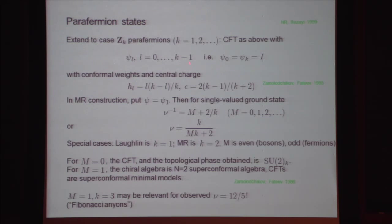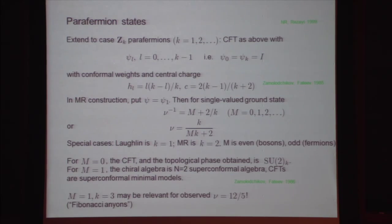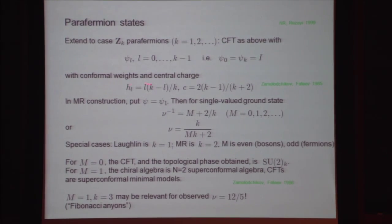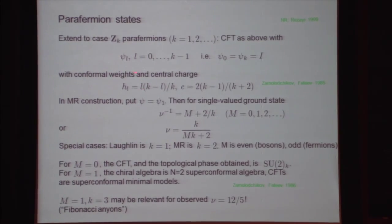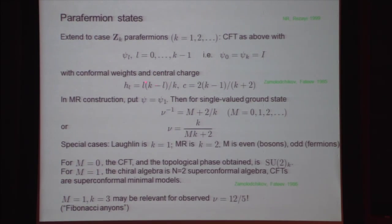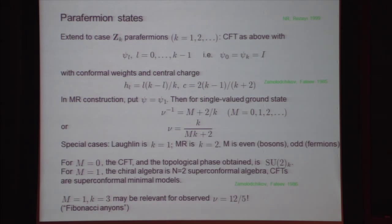I'll take the particular parafermion theory — the SU(2) level K mod U(1) parafermions from Zamolodchikov and Fateev. The conformal weights are given by that formula for L between 0 and K, and the central charge by this formula. Putting Psi equal to Psi_1 in our construction, we determine the allowed values of nu inverse to get single-valued wave functions: nu inverse equals m plus 2 over K, or equivalently nu equals K over (mK plus 2), where m is a non-negative integer.